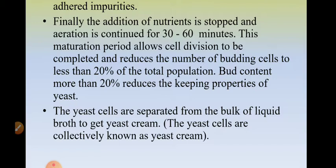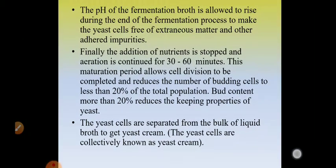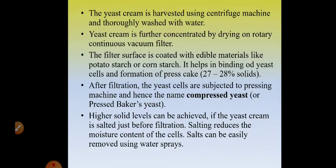The yeast cells are then separated from the bulk of the liquid to get yeast cream. The yeast cells collectively are known as yeast cream, and they are harvested using a centrifuge machine. The whole fermented broth is passed through the centrifuge machine to separate the liquid and obtain the yeast cream.